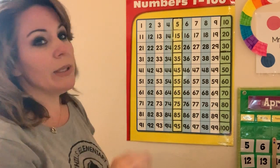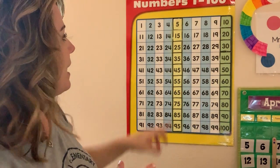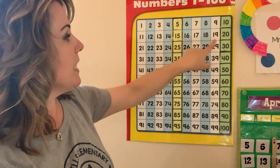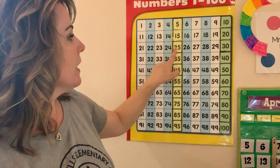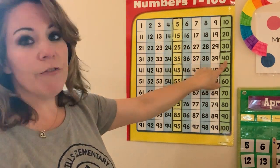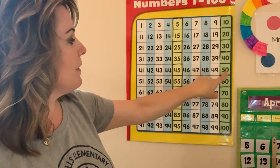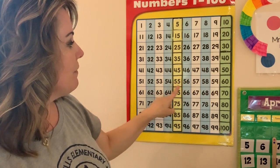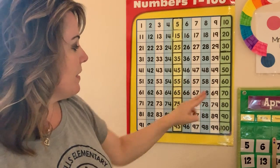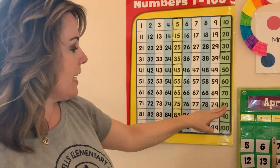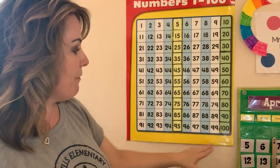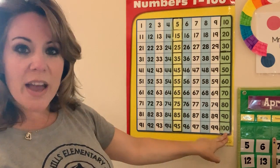Okay, so let's count by fives together. Ready? Five, 10, 15, 20, 25, 30, 35, 40, 45, 50, 55, 60, 65, 70, 75, 80, 85, 90, 95, 100.